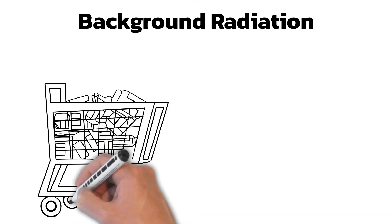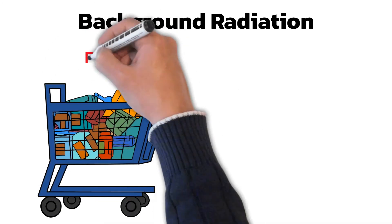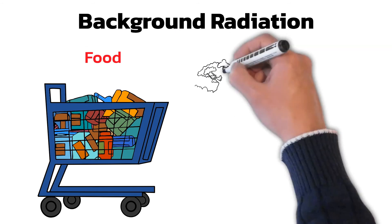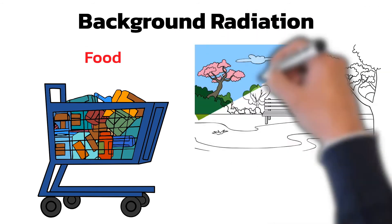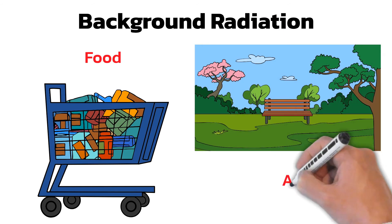Around 12% comes from radioisotopes in our food and drink. The biggest contribution to background radiation, about 50%, is in the air. This is mainly from radon gas seeping through from radioactive rocks deep underground.